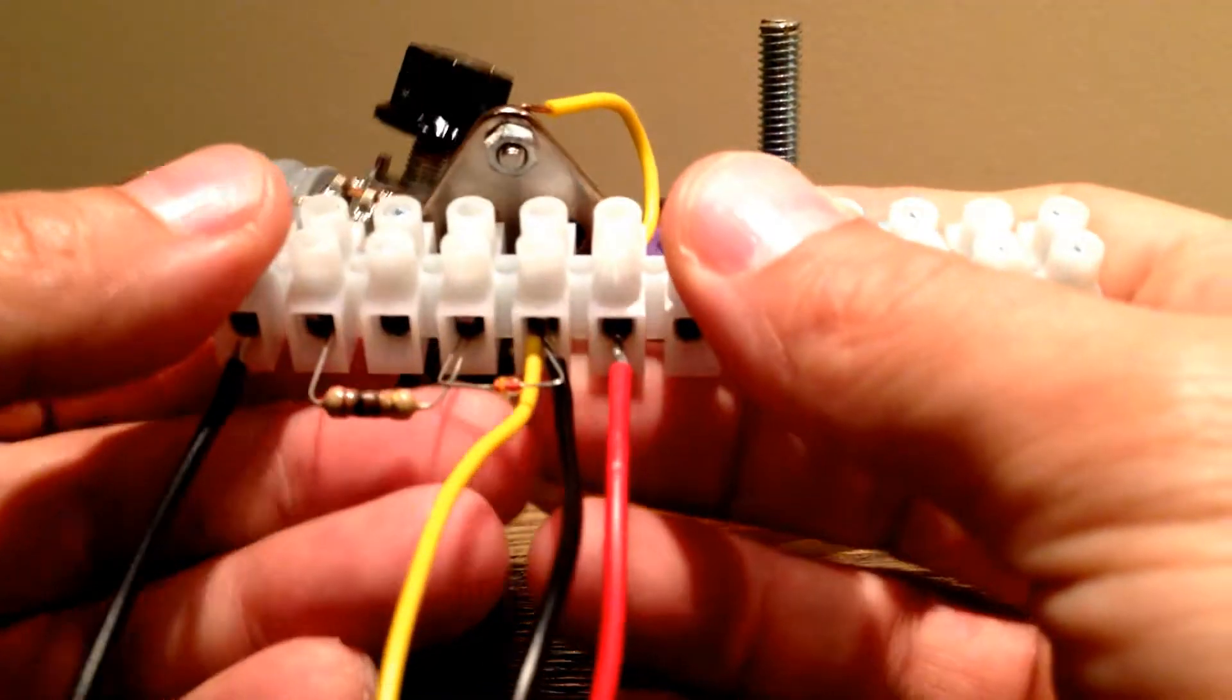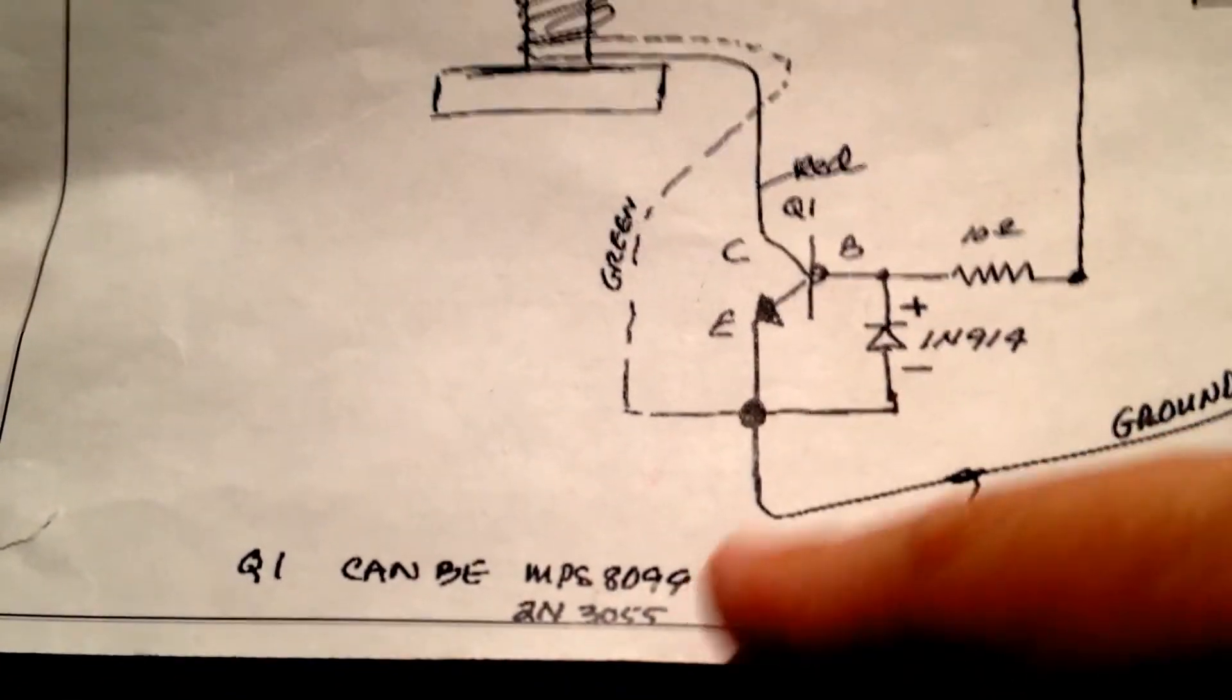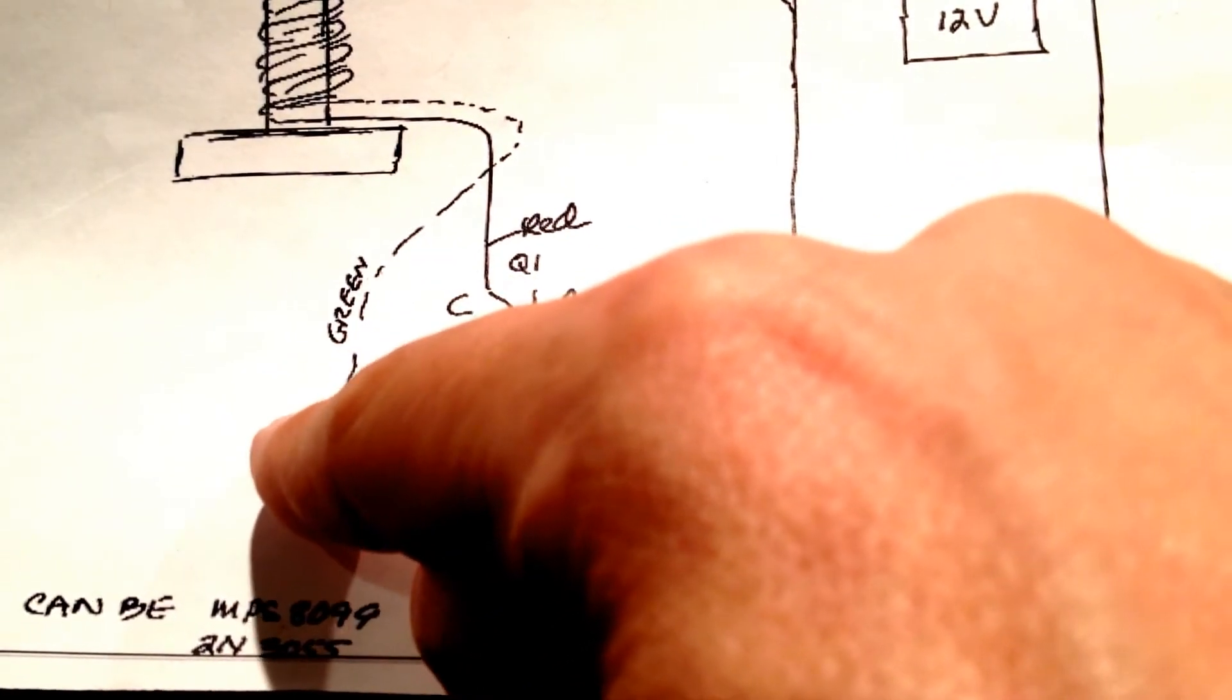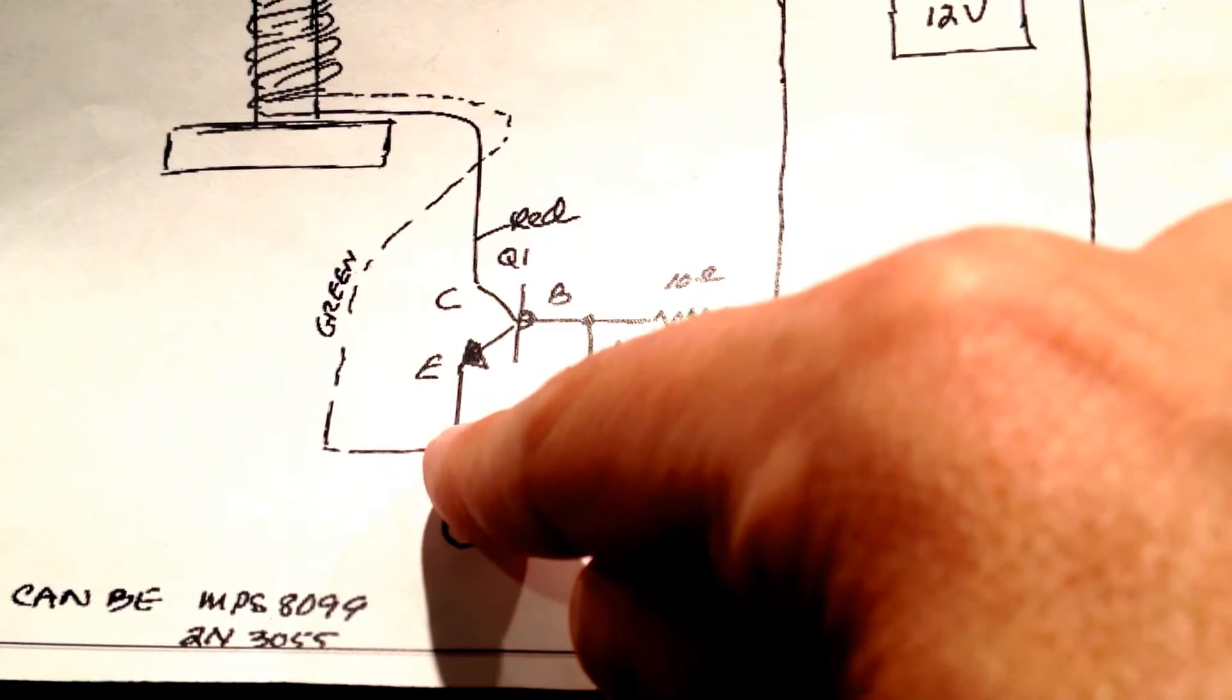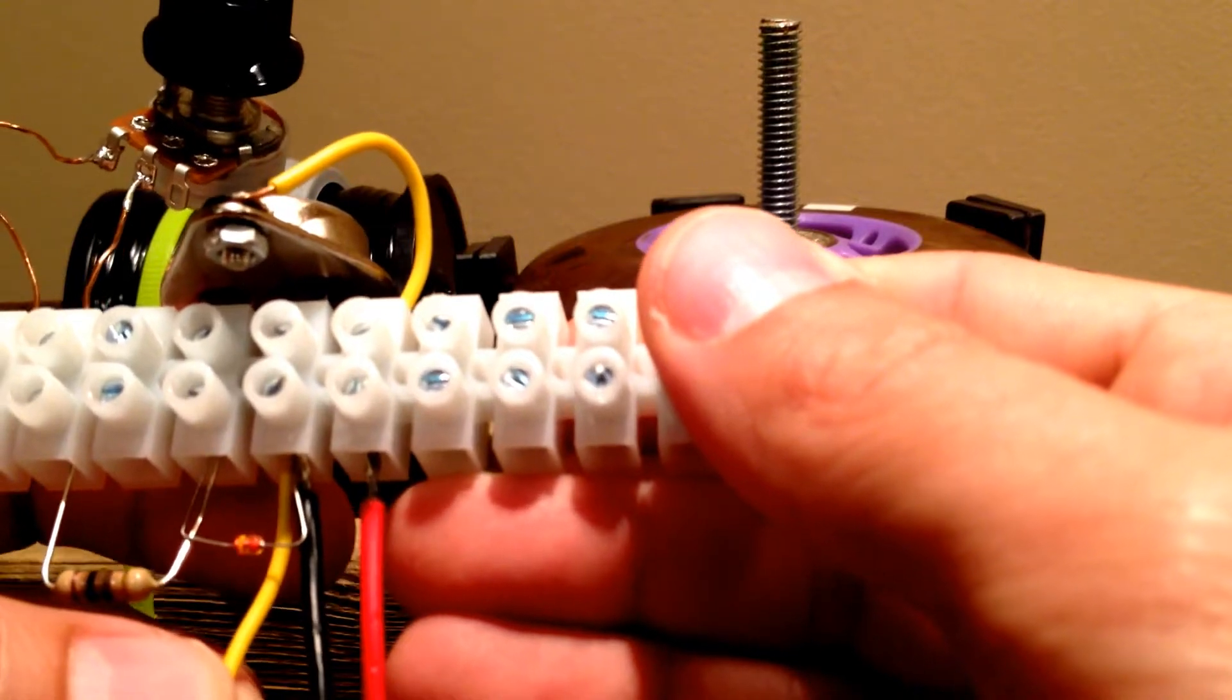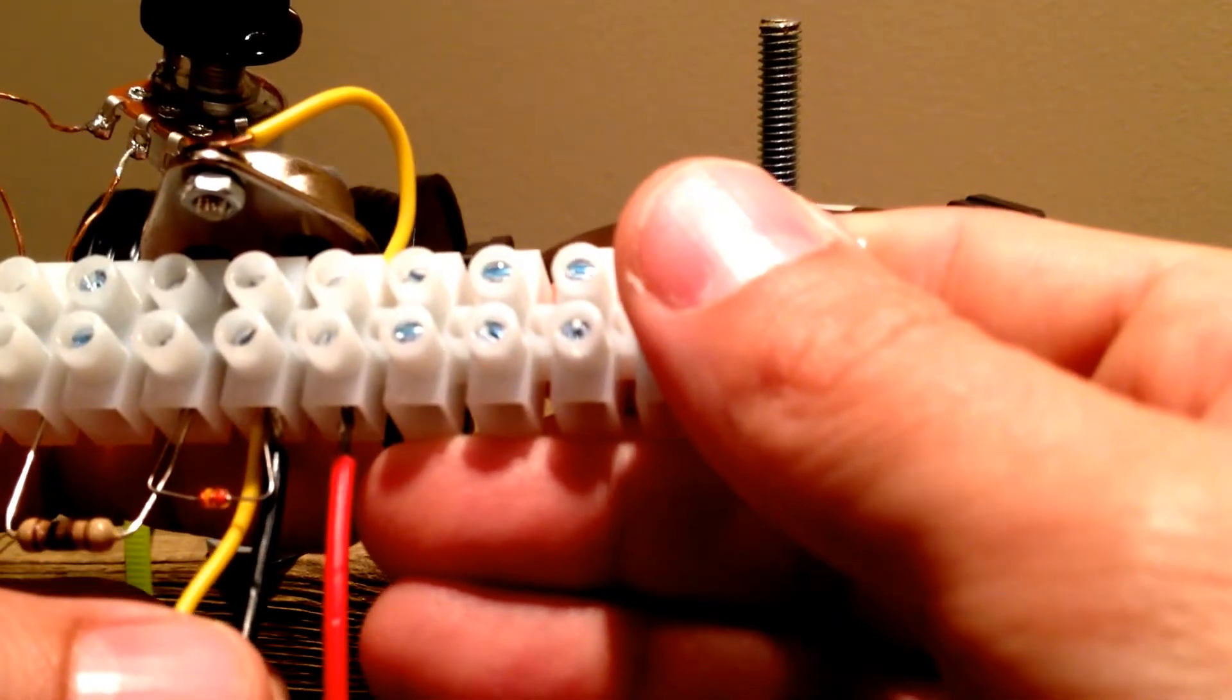So as you can see there's a couple wires going on the emitter but what you see on the emitter is you've actually got the negative of the battery going into the emitter, you've got the trigger wire of the start going into the emitter and you've actually got the one part of the diode going into the emitter so that's basically what we got here.